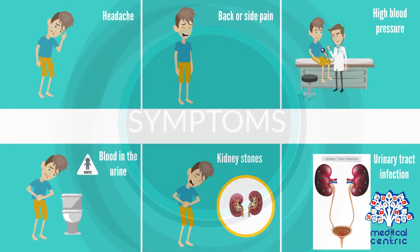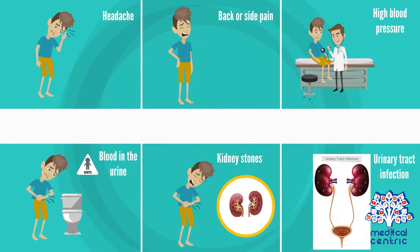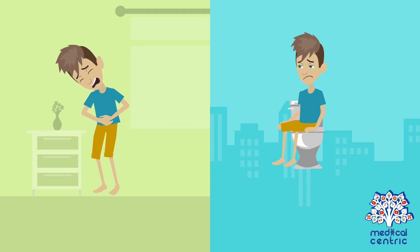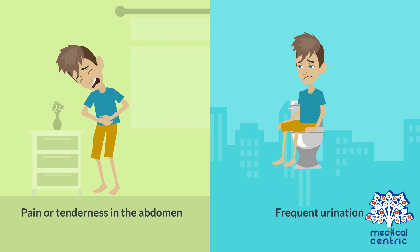Symptoms include: headache; back or side pain; high blood pressure; blood in the urine; kidney stones; urinary tract or kidney infections; pain or tenderness in the abdomen; and frequent urination.